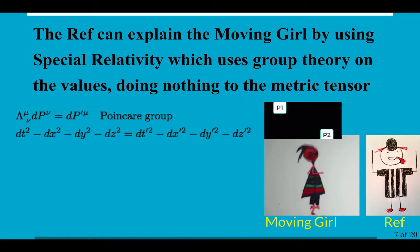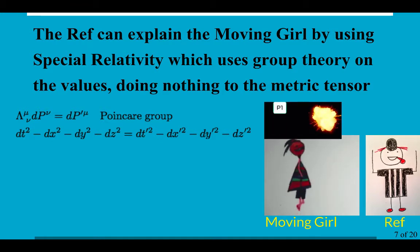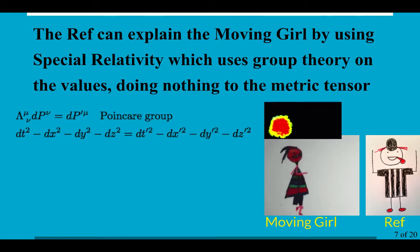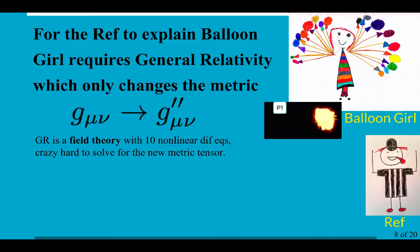So the ref goes and explains the moving girl by using special relativity. And that uses group theory, specifically the Poincaré group, on that four vector and says, you can have different values. But when you calculate the square, this differential interval, you'll end up with exactly the same value. Now, if the ref wants to go and explain balloon girl, that requires general relativity because that only changes the metric, leaves the values completely alone. And general relativity is a field theory with ten nonlinear differential equations next to impossible to ever solve, so everyone uses the same one.